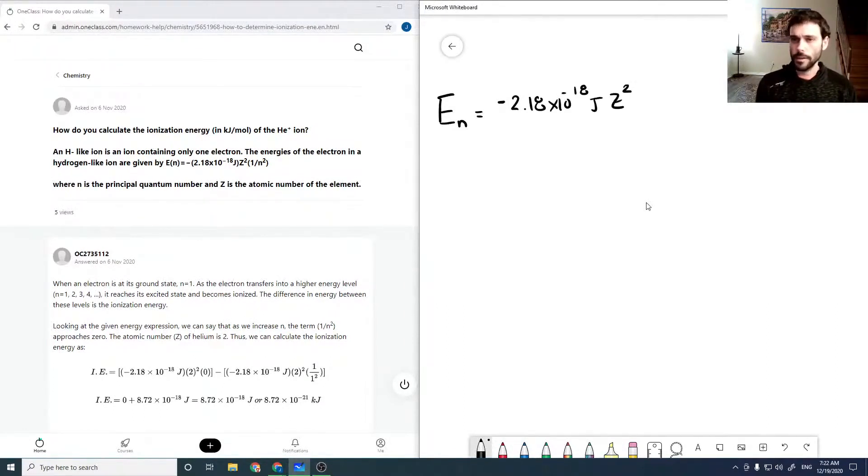Where this here is our atomic number. So for helium, this would just be 2. So for helium-plus, our energy levels are given by this equation.